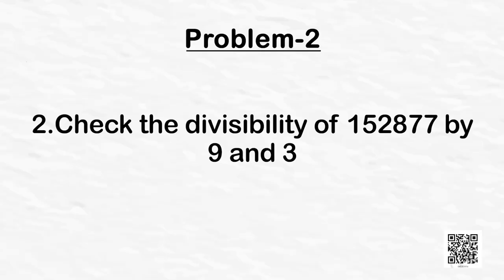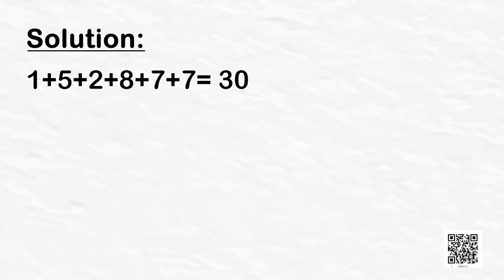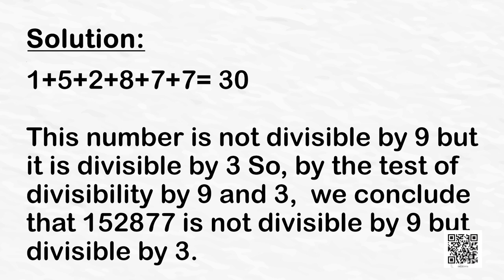Now let us move on to problem number 2: check the divisibility of 1,52,877 by 9 and 3. The sum of the digits is 1 + 5 + 2 + 8 + 7 + 7 = 30. This number is not divisible by 9 but it is divisible by 3. So by the test of divisibility, we conclude that 1,52,877 is not divisible by 9 but is divisible by 3.